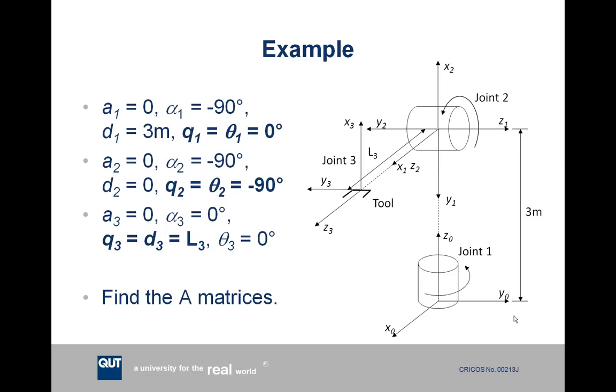d1 is the distance from x0 to x1 measured along the z0 axis. This corresponds to that 3 meter measurement, so d1 is 3 meters. theta1 is the angle from the x0 axis to the x1 axis measured around the z0 axis. x0 and x1 are currently aligned, so the angle is 0. Because this is our joint variable, this is also our q1 variable.